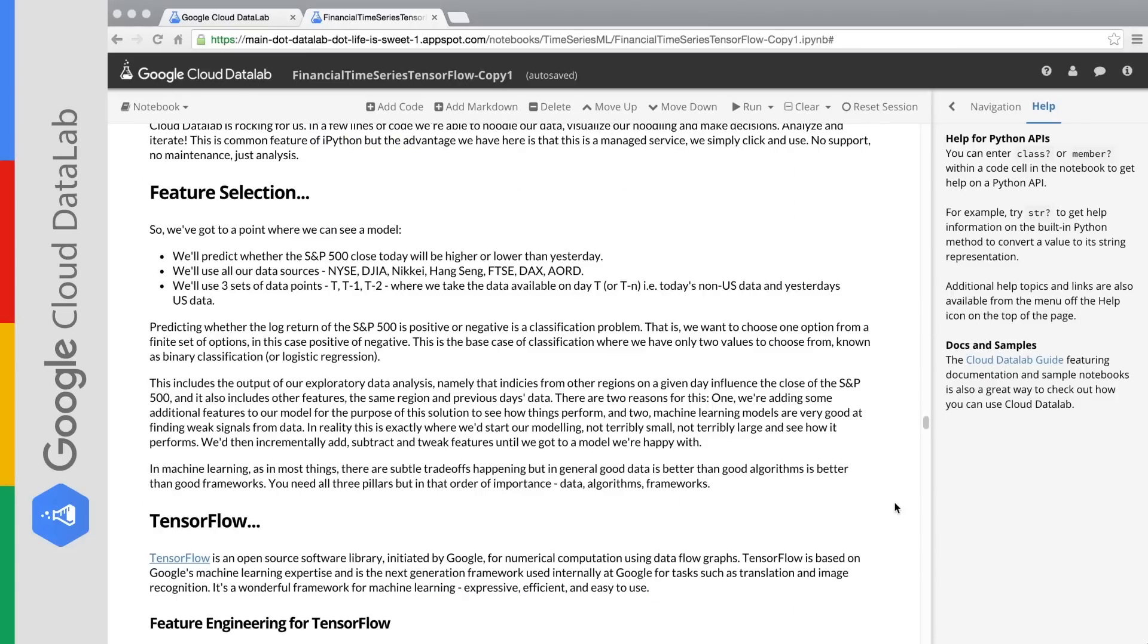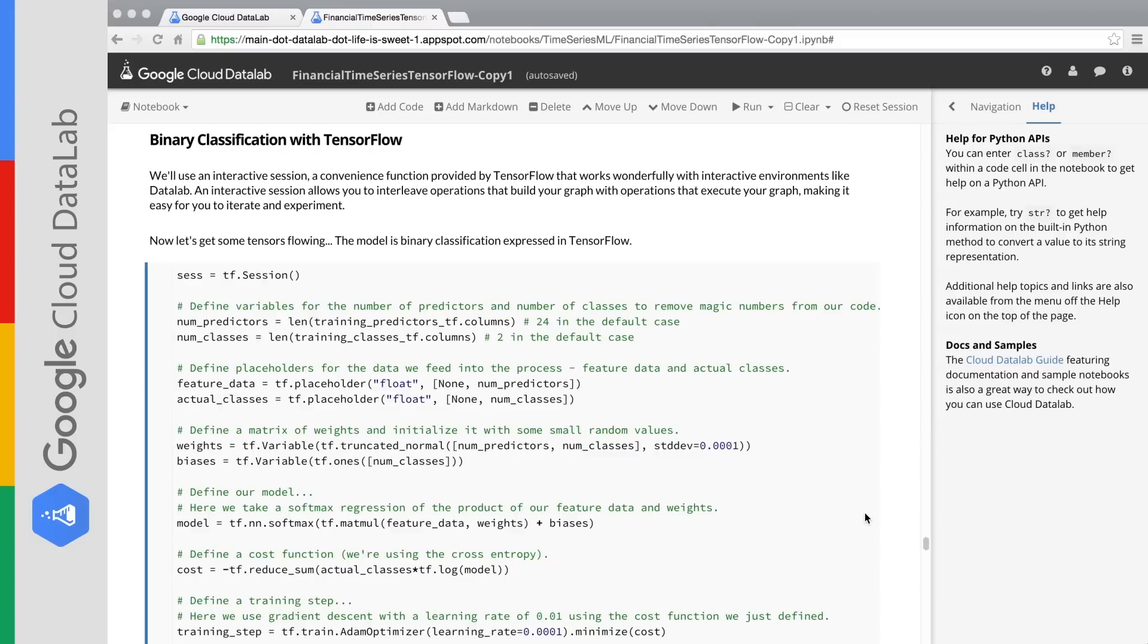We're now in a position to articulate the model that we're going to build to predict what happens with the S&P 500. We're going to predict whether the S&P 500 closed today will be higher or lower than yesterday. So let's dive into the meat of our modeling. We're going to build two classifiers using TensorFlow running on top of Google Cloud Platform. We'll build a very simple one, the simplest one we can think of, which is always a good starting point, and then we're going to build a much more sophisticated one.